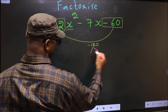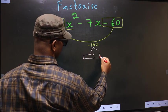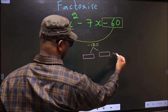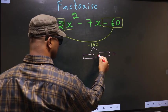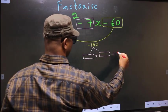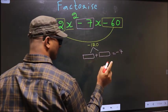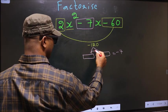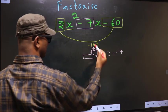Now you should look for two numbers such that when you add these two numbers, you get the middle coefficient, which is -7. And when multiplied, you should get -120.